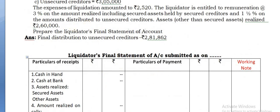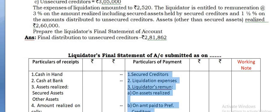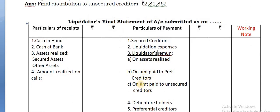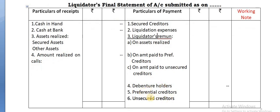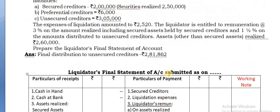On the payment side, you can write all the items first. But here, under remuneration, remember you have to take 3 categories: on assets realized, on payment made to preferential creditors, and on amount paid to unsecured creditors. Then debenture holders, preferential creditors, unsecured creditors.